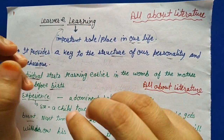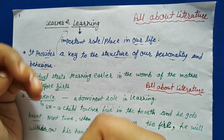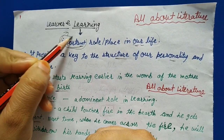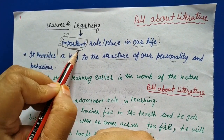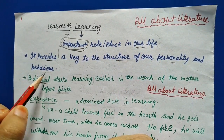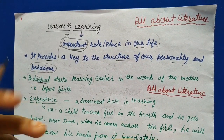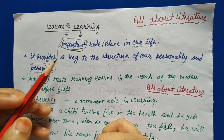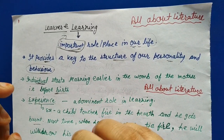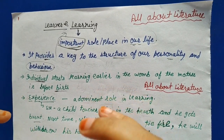First of all, we have to understand what is learning and how it takes place in our day-to-day life. Learning is important in our life. It provides a key to the structure of our personality and behavior — how we behave and how our personality shows. We learn something positive or negative, and that shows in our behavior.